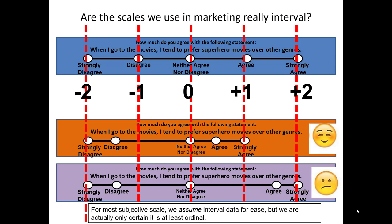Why do we treat ordinal subjective scales as interval? Interval data is extremely easy to work with. Once you can calculate an average, variance, and standard deviation, a number of statistical tools become available that aren't available for ordinal data. Research also suggests that when we treat subjective continuum scales as interval even though they may only be ordinal, we're not punished as heavily as it may seem — it usually just means we need to collect a slightly larger sample size than normal calculations would imply.